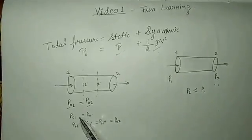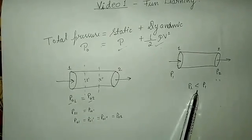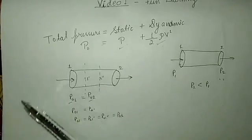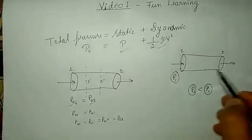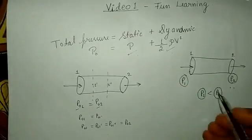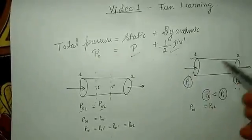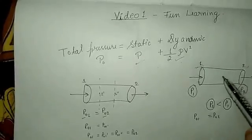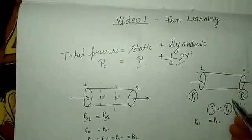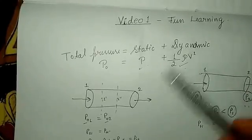Now we say total pressure is always the same at 1, 2, or anywhere in the fluid flow — but according to the pressure difference condition, fluid will never flow? This is where static and dynamic pressure play a role. You can say P naught 1 equals P naught 2, but you cannot say static pressure at 1 equals static pressure at 2, or dynamic pressure at 1 equals dynamic pressure at 2. Static and dynamic pressure change, but total pressure remains conserved.